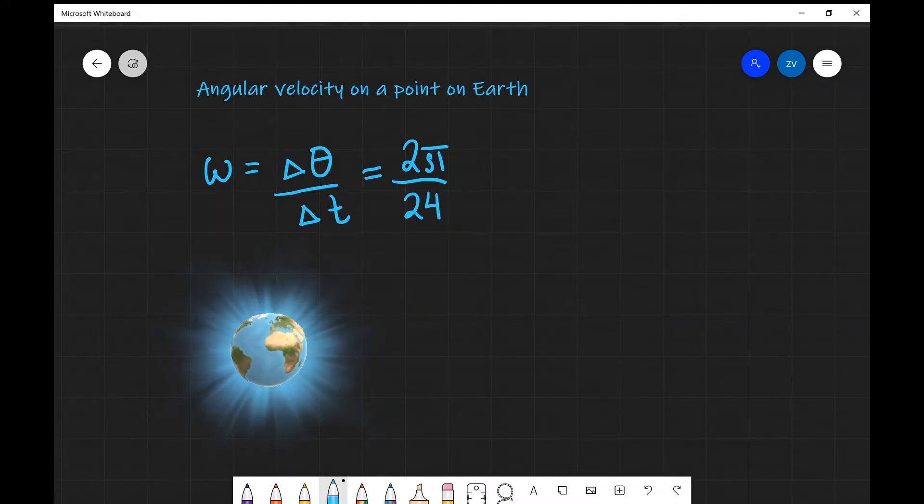This is still not an SI unit, so what I will need to do is to convert that to seconds, so there's 60 minutes in an hour and each one of those minutes will have 60 seconds. So there's going to be 24 times 60 times 60 seconds. If I was to input that into a scientific calculator, I'm going to get a value for the angular velocity on a point on the surface of the earth, which will be approximately 7.27.